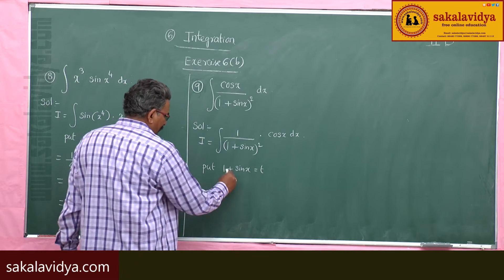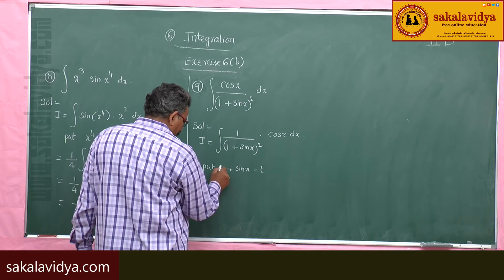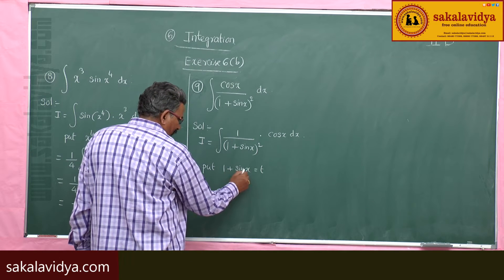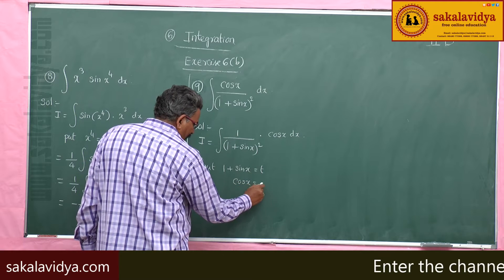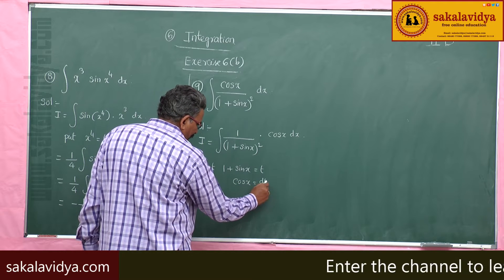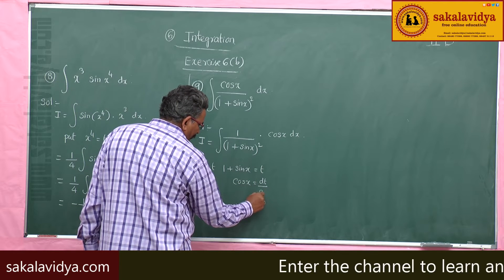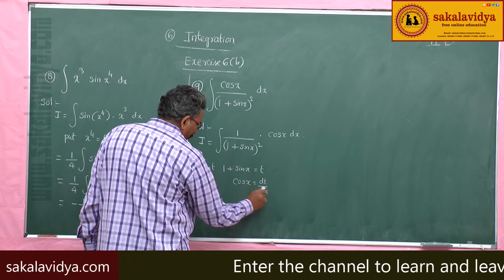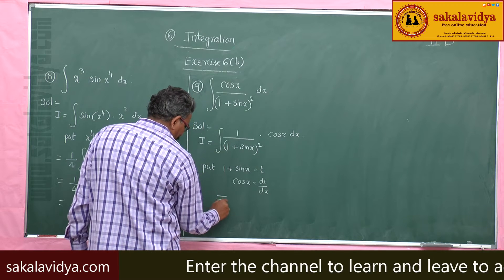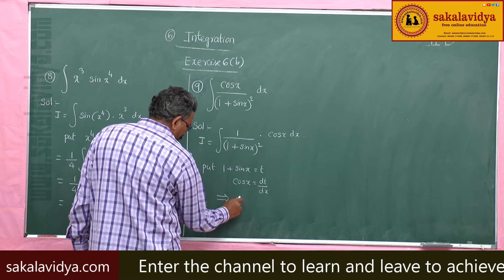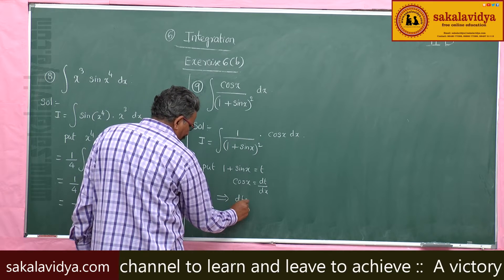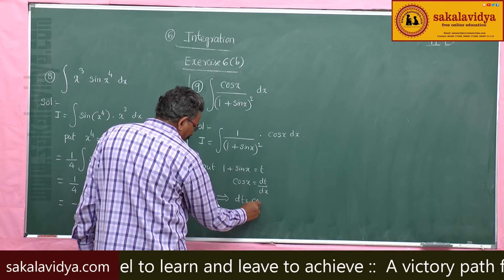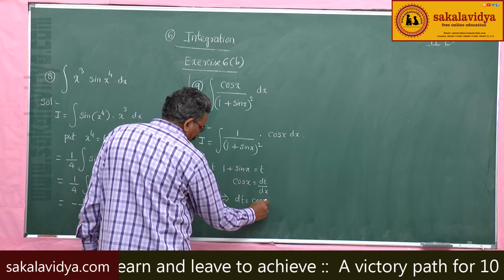So, we get: the derivative of 1 is 0, and the derivative of sin x is cos x. This gives us dt by dx, or dt equal to cos x dx.